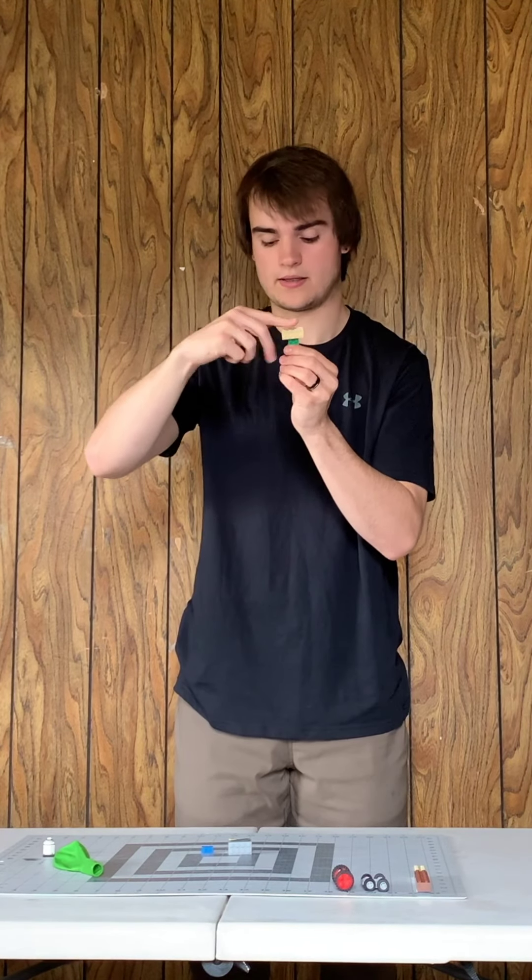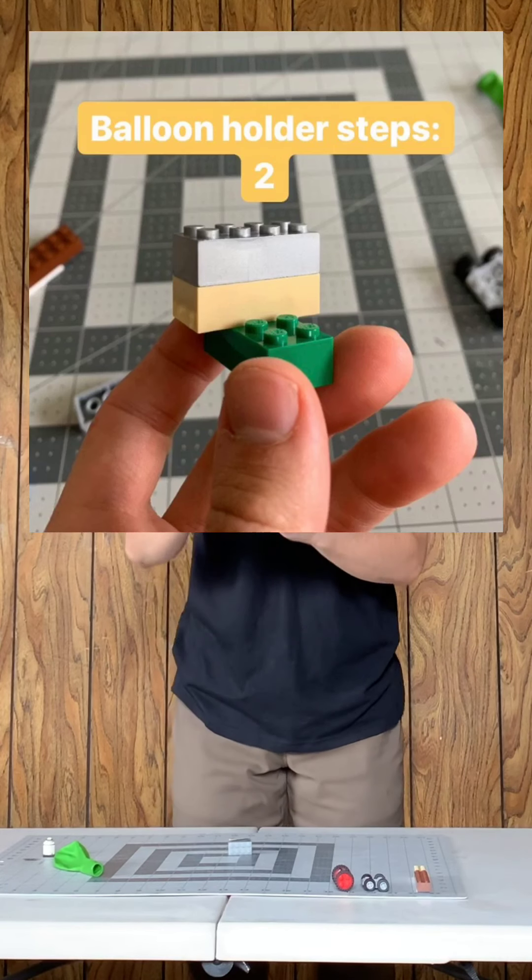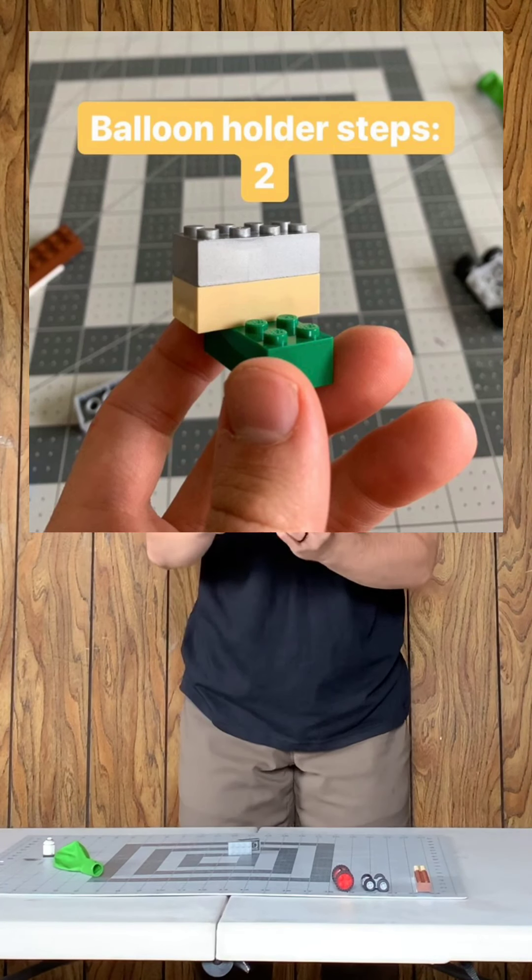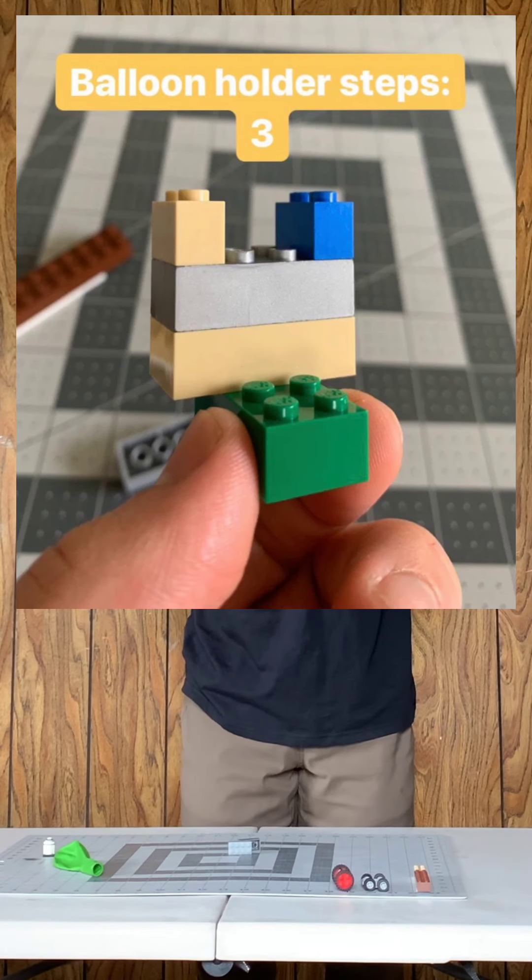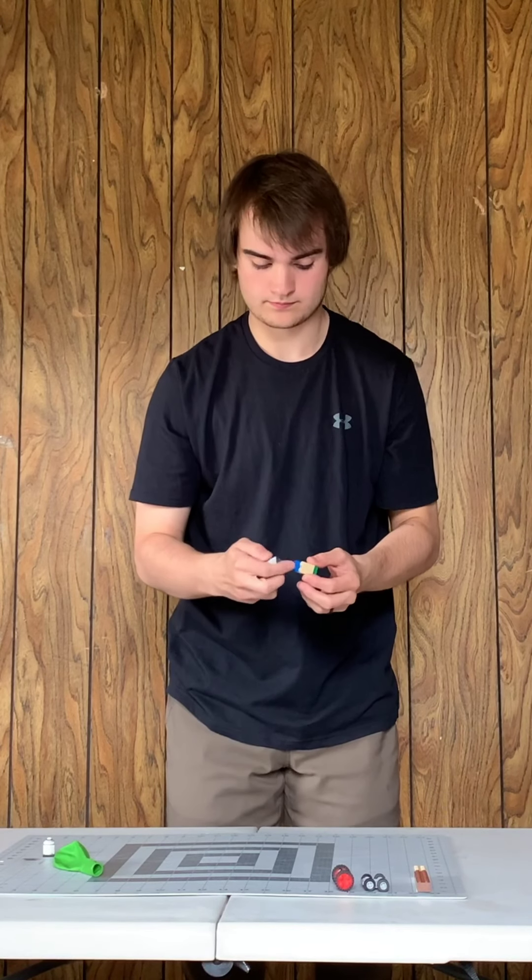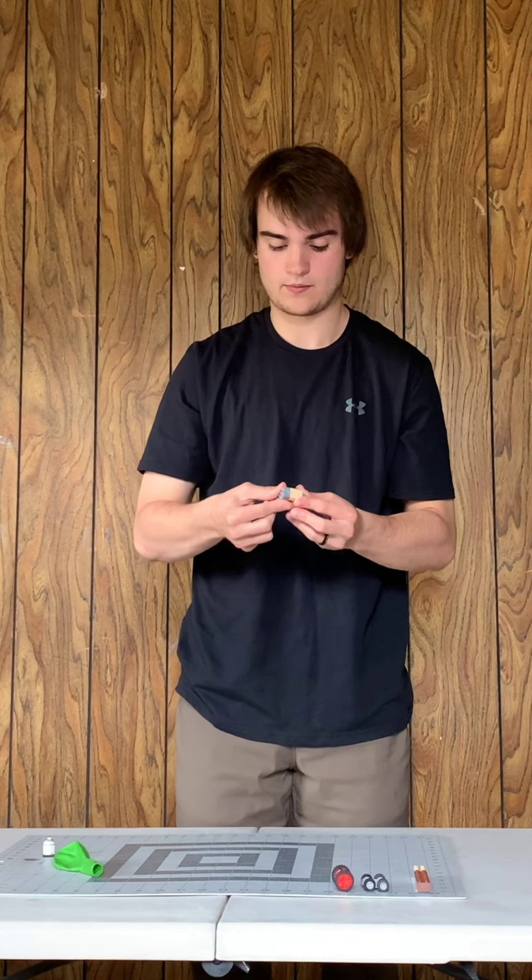And then we're going to go in and at the ends of the tan piece we're going to add both of the smaller Lego pieces, the two block ones. And now a connector piece.